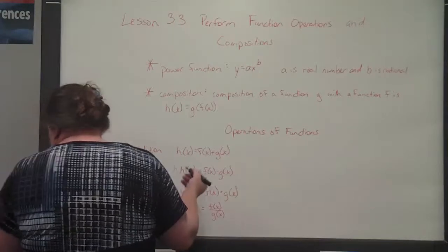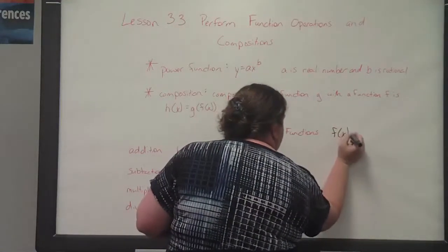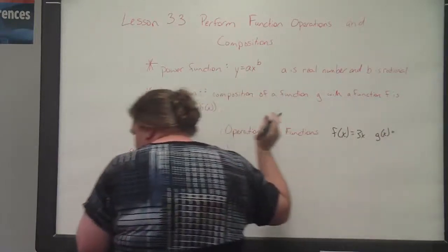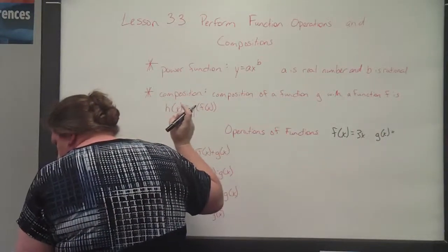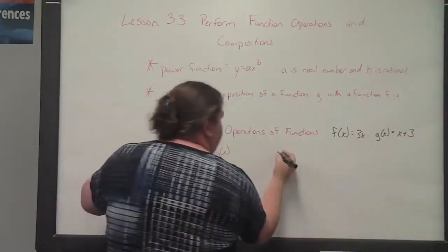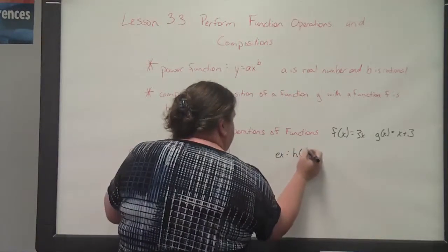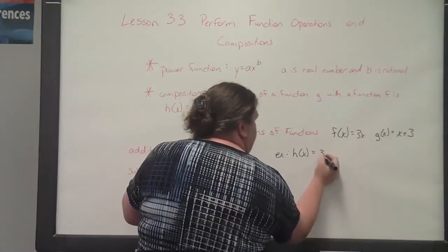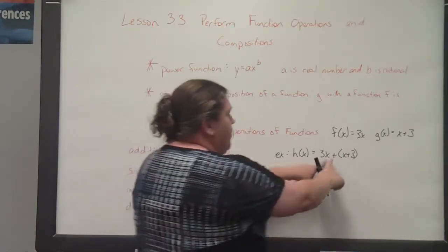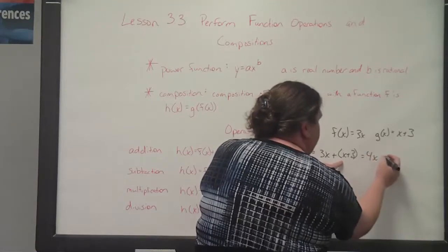For our examples, we'll use f of x equals 3x and g of x equals x plus 3. For addition, h of x equals f of x plus g of x, which is 3x plus x plus 3. So 3x plus x gives us 4x plus 3.